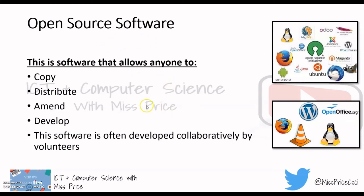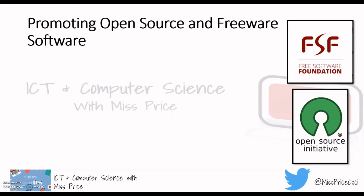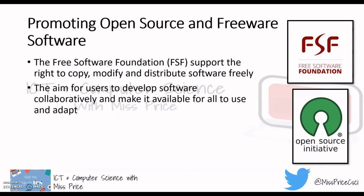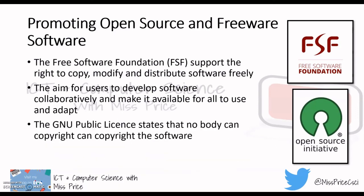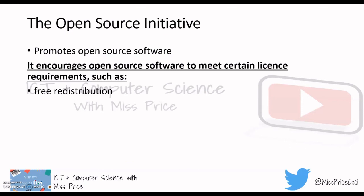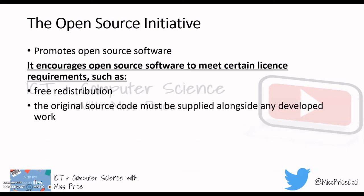The Free Software Foundation supports the right to copy, modify, and distribute software freely, aiming for users to develop software collaboratively and make it available for all. The GNU Public License states that nobody can copyright the software. The Open Source Initiative promotes open source software — the 'free' in it stands for freedom, not free as in cost.